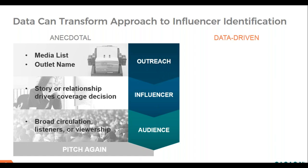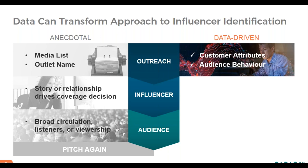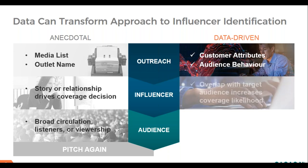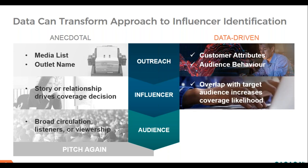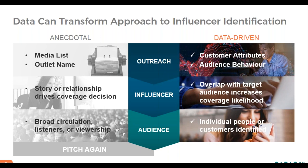It's time for comms to transform to a new data-driven model of influencer identification. In this model, the communicator starts with a look at the end customer or audience data. That data can then be used to generate the right set of influencers to reach. Because data was used to inform the outreach, influencers are more likely to respond and generate earned media since they can see the relevance to their target audience. Communicators also gain the ability to track details on the audience makeup, arming them with the data to inform future influencer outreach.